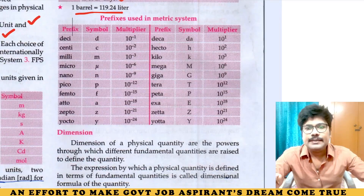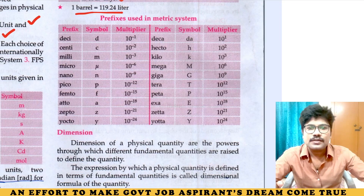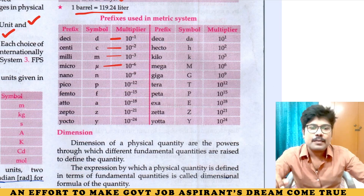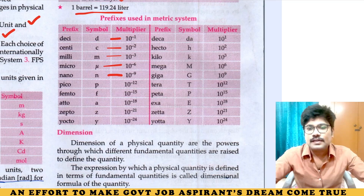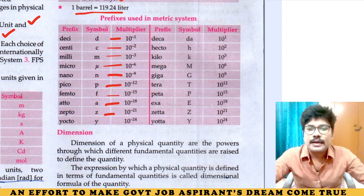Now, prefixes. Deci is 10 to the power of minus 1. Centi is minus 2. Milli is 10 to the power of minus 3. Micro is 10 to the power of minus 6. Nano is 10 to the power of minus 9. Angstrom is 10 to the power of minus 10. Pico is 10 to the power of minus 12. Femto is 10 to the power of minus 15. Atto is 10 to the power of minus 18. Zepto is 10 to the power of minus 21. Yokto is 10 to the power of minus 24.